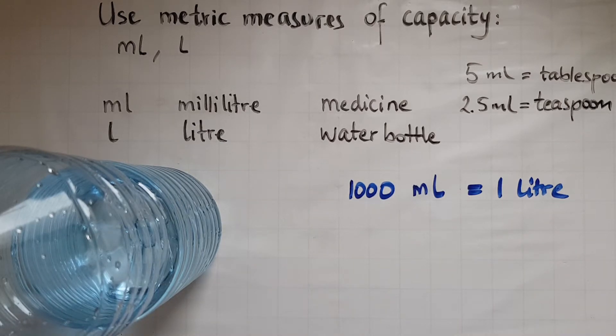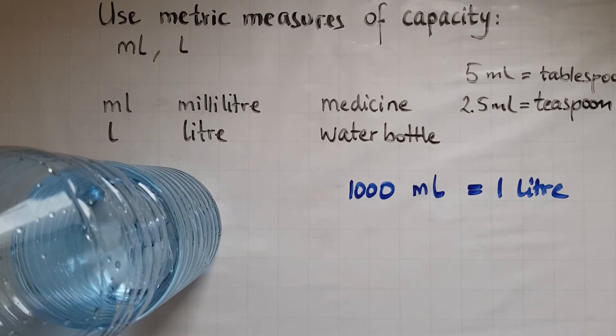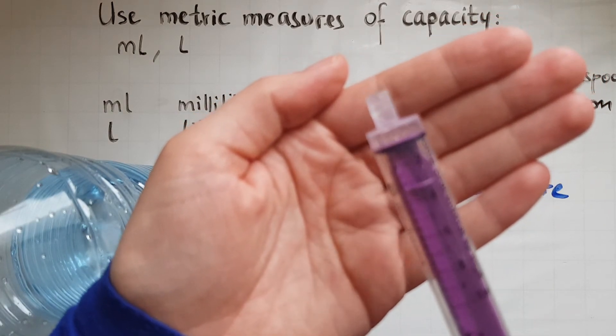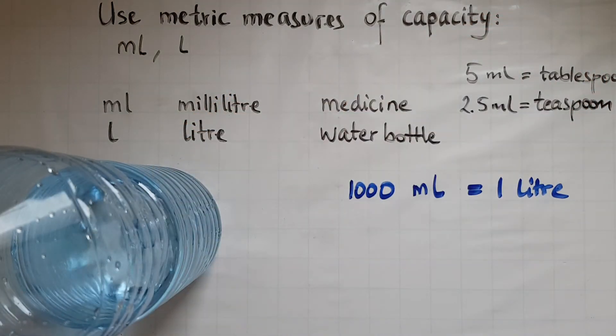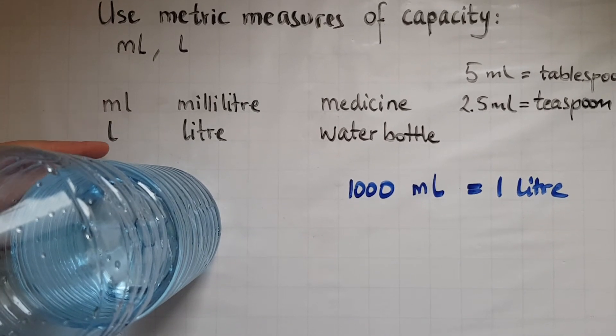And since milliliters are very small amounts, you need a thousand of them to make a liter. So if you tried to fill with a syringe, trying to fill lots of this into a one liter bottle, you'd need a thousand of them. So a milliliter is much smaller than a liter.